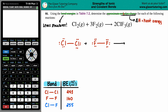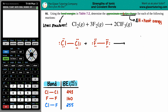Fluorine is the most electronegative element, so it won't be in the center — chlorine goes in the middle surrounded by three fluorines. ClF₃ has all single bonds: one chlorine with three fluorines attached. The fluorines each have three lone pairs (six lone electrons), and chlorine has two lone pairs.